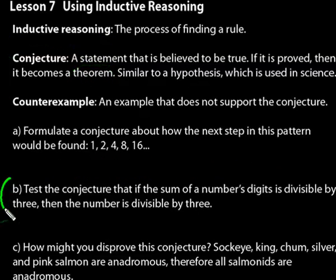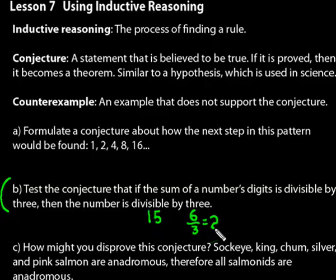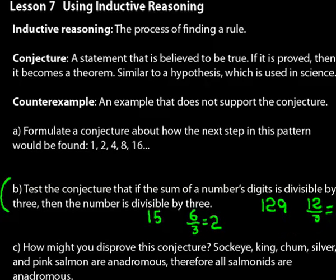Moving on to practice problem B: test the conjecture that if the sum of a number's digits is divisible by 3, then the number is divisible by 3. Let's think of some numbers. Let's do 15. The sum of those digits equals 6 — 1 plus 5 is 6 — and that is divisible by 3. Let's try something not quite so obvious: 129. Adding the digits: 1 and 2 is 3, plus 9 is 12. Divide 12 by 3 equals 4, so the sum of those digits is divisible by 3. And 129 divided by 3 is 43 — it works.